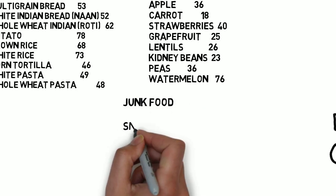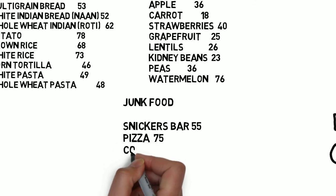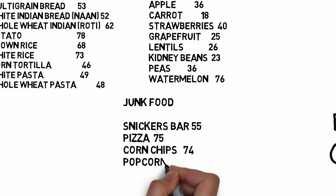And to put it in perspective, let's compare it to some junk food, like Snickers bar, 55. Pizza, 75. Corn chips, 74. Popcorn, 65. And soda, like Coca-Cola, about 60.